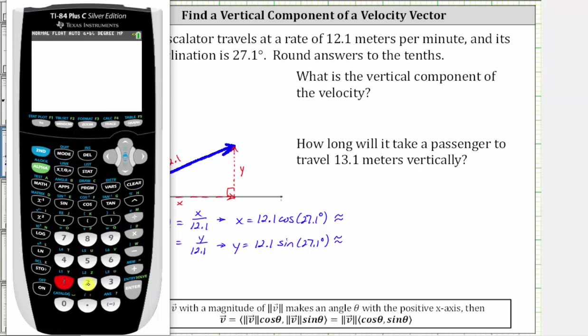And then we enter 12.1 cosine 27.1 degrees and 12.1 sine 27.1 degrees. Rounding to the tenths, the x component is approximately 10.8 and the y component is approximately 5.5.